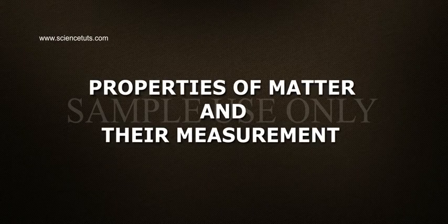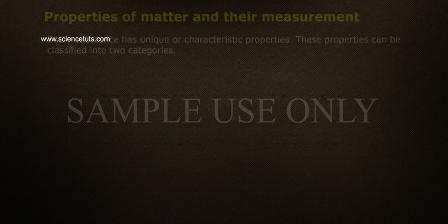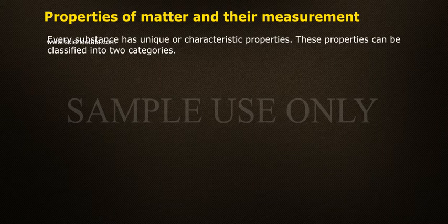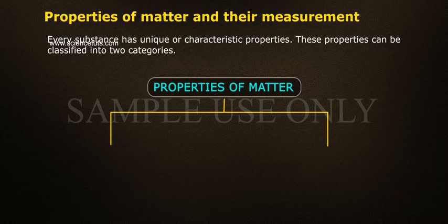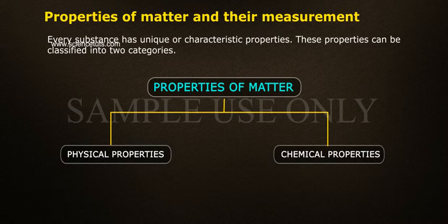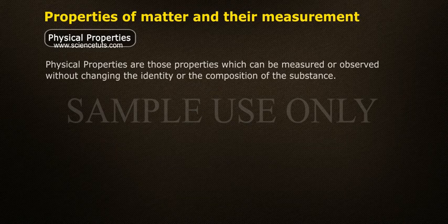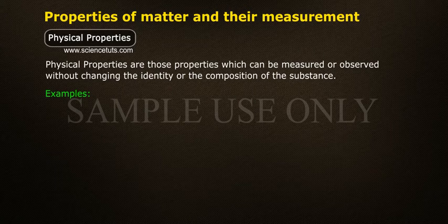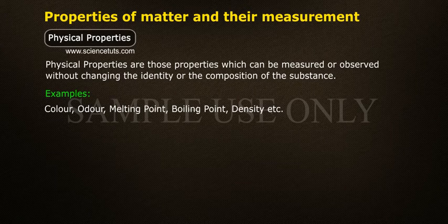Properties of matter and their measurement. Every substance has unique or characteristic properties. These properties can be classified into two categories: physical properties and chemical properties. Physical properties are those which can be measured or observed without changing the identity or composition of a substance. Examples include color, odor, melting point, boiling point, density, etc.